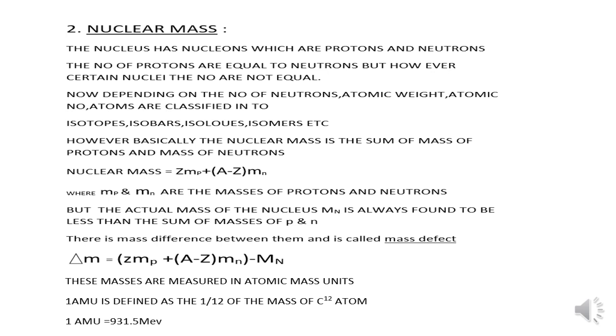But it is found that the actual mass of the nucleus Mn is always found to be less than the sum of the masses of protons and neutrons. Hence, there is a mass difference between them and that difference is called as mass defect, denoted by the letter delta M. Delta M is given by the formula Z Mp plus A minus Z Mn minus Mn.